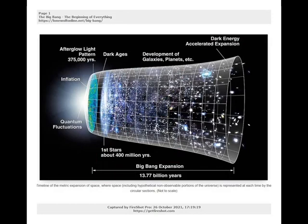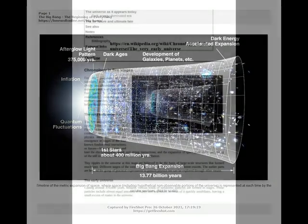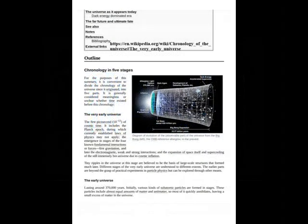We are working our way to key stages that include Dark Ages, Earliest Structures and Stars Emerge, Reionization, Galaxies, Clusters and Superclusters, the Universe as it appears today, and Dark Energy-dominated Era. Buddy from Town is working his way through some of the key Big Bang stages so he can get to what is happening in space today. In our previous videos we covered the very early universe, lasting around 370,000 years, initially, where various kinds of subatomic particles are formed in stages. These particles include almost equal amounts of matter and antimatter, so most of it quickly annihilates, leaving a small excess of matter in the universe.